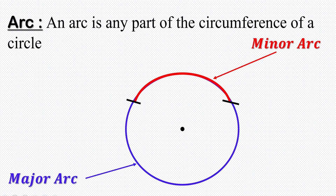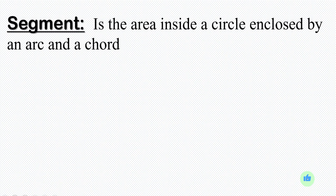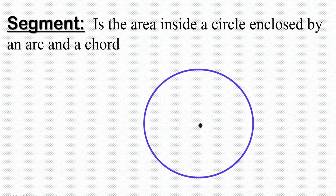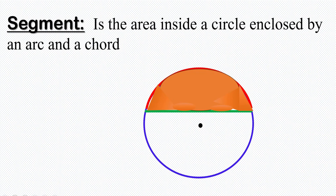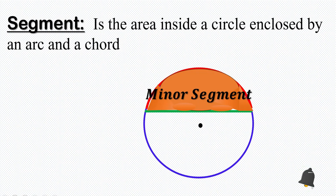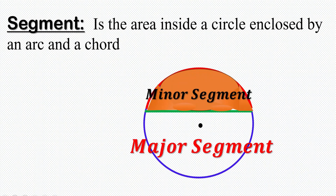The next terminology is segment. When we talk of segments, we are talking about the area inside the circle enclosed by an arc and a chord. The area formed by the arc and the chord is the segment. Because we can see a bigger and a smaller segment, the smaller one becomes the minor segment and the bigger part becomes the major segment.